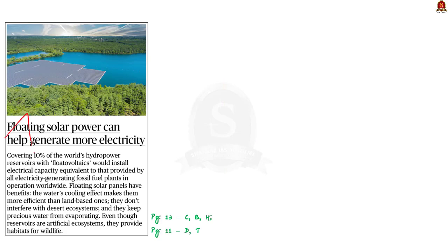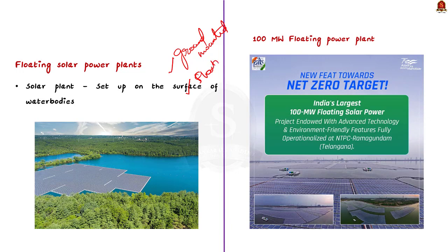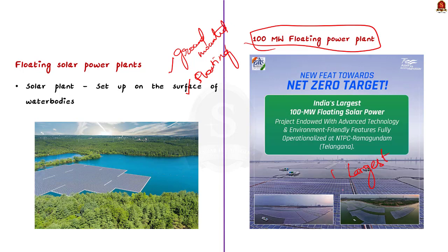The next news article discusses the advantages of floating solar power plants. Solar plants can be either ground-mounted or set up on the surface of water bodies. India recently operationalized a floating power plant in Ramagundam, Telangana — a 100 MW floating solar power project, now fully operational and the largest of its kind in India.